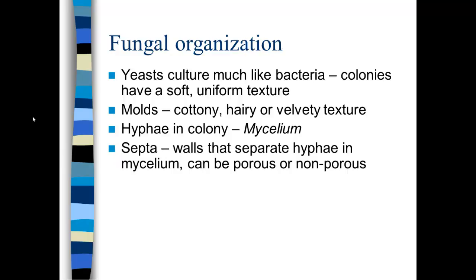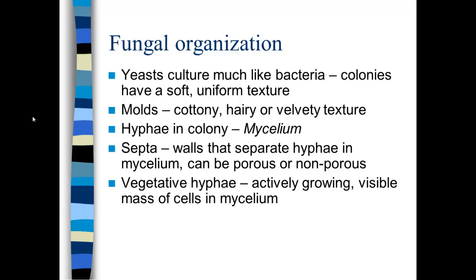Septa are walls that will separate the hyphae in the mycelium. These walls can be porous to allow for cell-to-cell communication, and sometimes they're non-porous. Hyphae that are actively growing are called vegetative. Vegetative hyphae are actively growing and visible. Spores are reproductive hyphae, and they are generally much, much smaller. Vegetative hyphae are long and thin; spores are generally spherical.